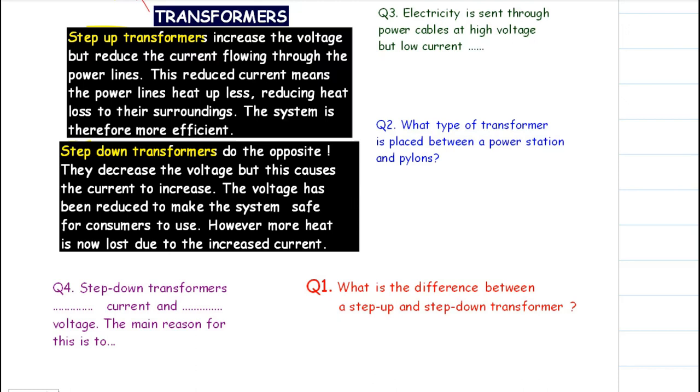I'll give you now the answers to questions one to four. I'll give you the verbal answers and you can check them against yours. Firstly, what is the difference between a step-up and step-down transformer? A step-up transformer increases voltage, and a step-down transformer decreases voltage. Question two, what type of transformer is placed between a power station and pylons? The answer is, a step-up transformer is placed between a power station and pylons. You can give the reason. The because is, we need to increase the voltage.